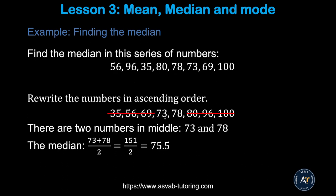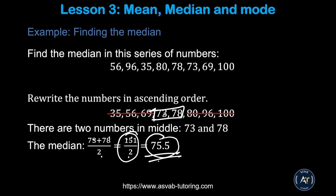However, if you have 2 middle numbers after sorting in ascending or descending order, you add those numbers and divide by 2. In this case the two middle numbers are 78 and 73. So 78 plus 73 divided by 2 gives you 151 over 2. Dividing that gives you 75.5 — so that is the median.